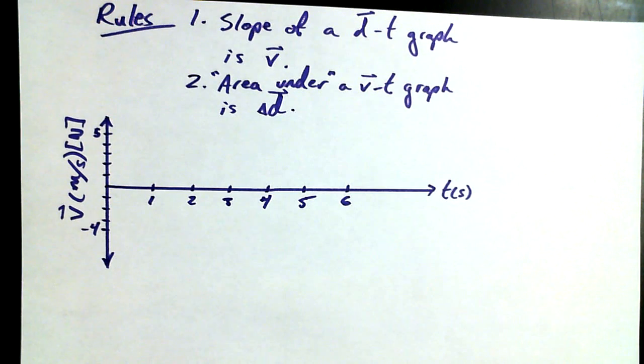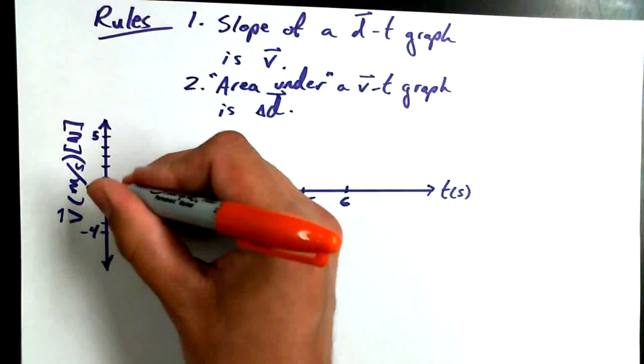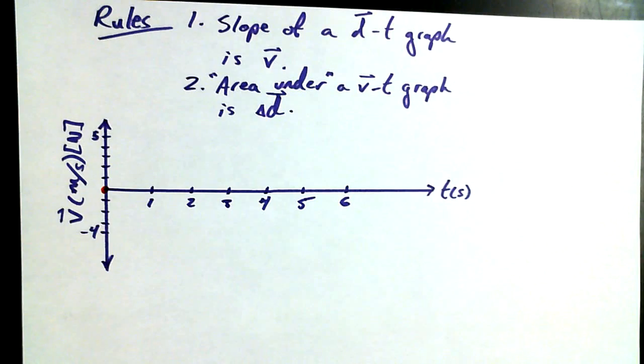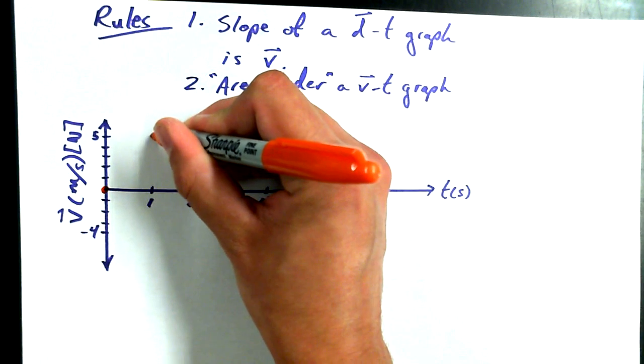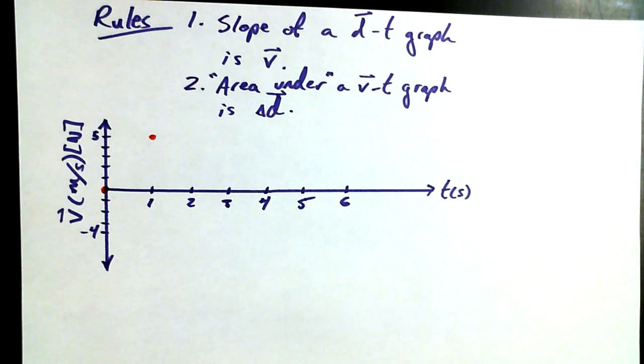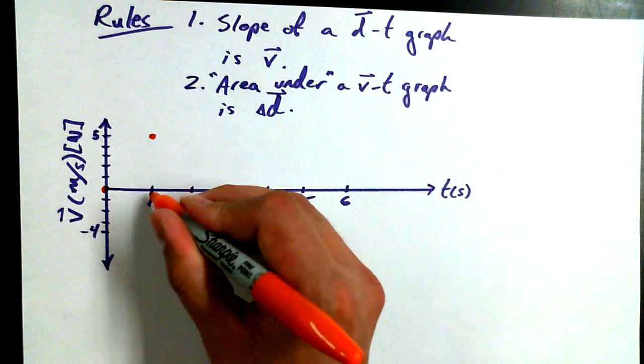And as I plot out my data, let's say that we have a monkey on roller skates. Monkey on roller skates gets from zero meters per second up to five meters per second. Don't call the animal rights people. One second. Up to five meters per second. In one second.